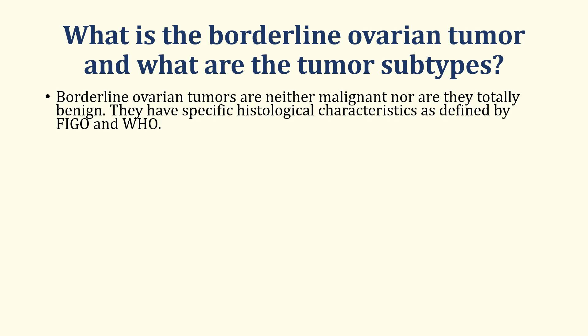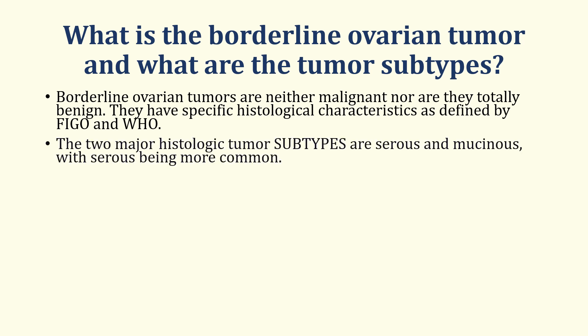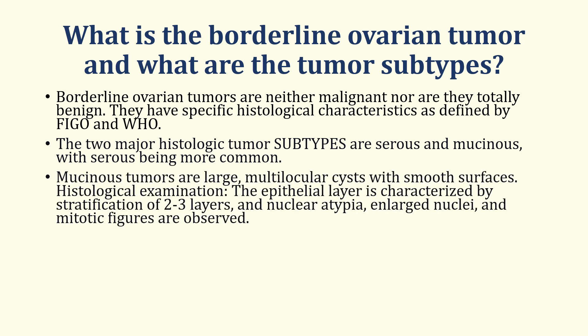Borderline ovarian tumors are neither malignant nor totally benign. They have specific histological characteristics as defined by FIGO and the World Health Organization. The two major histologic subtypes are serous and mucinous, with serous being more common. The mucinous tumors are larger, multilocular cysts with smooth surfaces, and on histological examination the epithelial layer is characterized by stratification of two to three layers and nuclear atypia. Enlarged nuclei and mitotic figures are also observed.